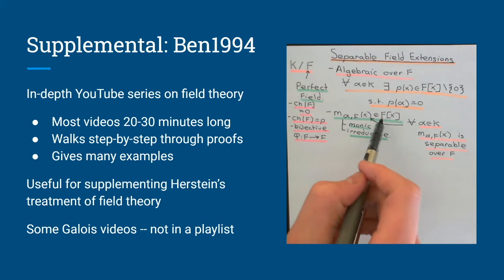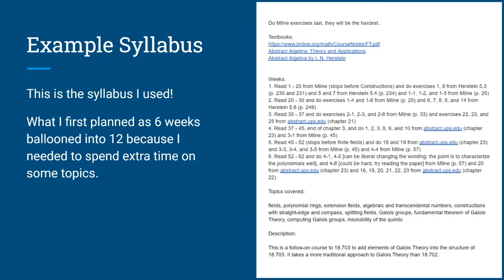Galois theory was the first course that I had really self-studied without a backbone of an MIT OpenCourseWare syllabus, so I had to make my own. I've copied it here so you can see the practice problems and reading I had scheduled for every week along with the topics and descriptions. What originally I planned to be six weeks ballooned into 12 because Galois theory was much denser than I expected — I ended up averaging about one problem set every two weeks. But because this was a self-study, there were no constraints, so I could take the time I needed to really understand the concepts.